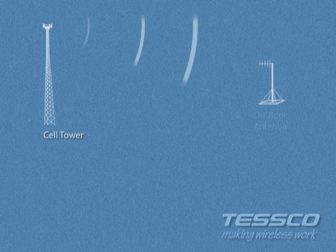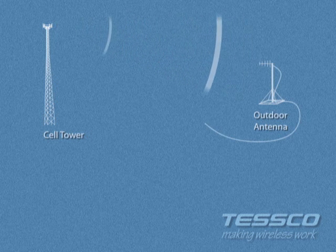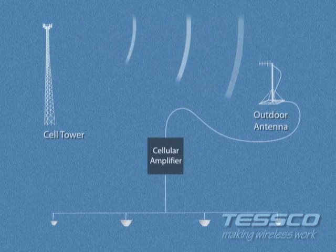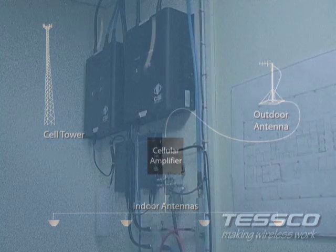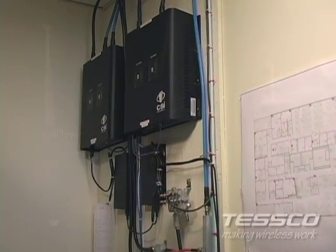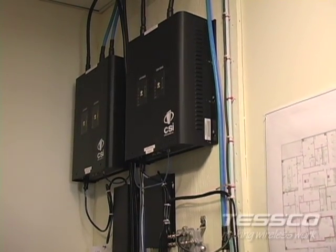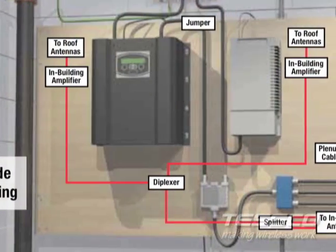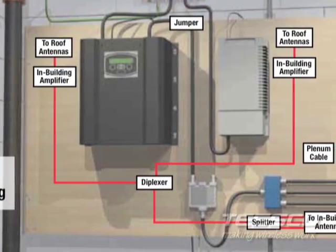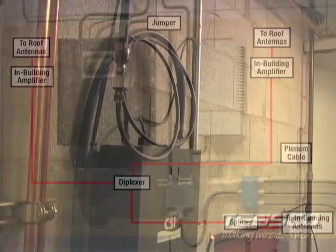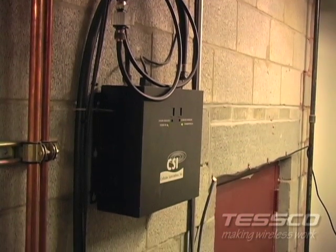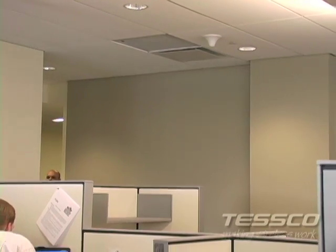Consider regenerating or amplifying the existing signal by using a distributed antenna system, also known as a DAS, or a bi-directional amplifier, also known as a BDA. A DAS or BDA system regenerates outdoor cellular coverage where available inside of a building using a series of amplifiers and antennas.